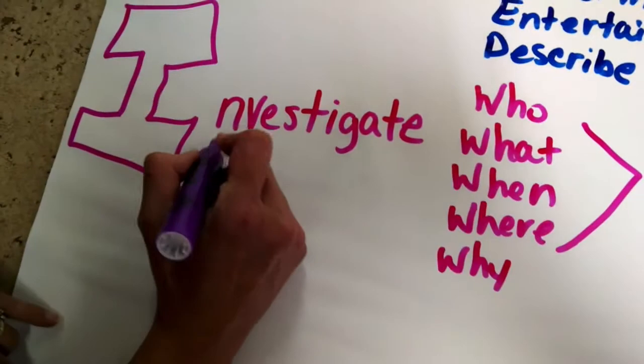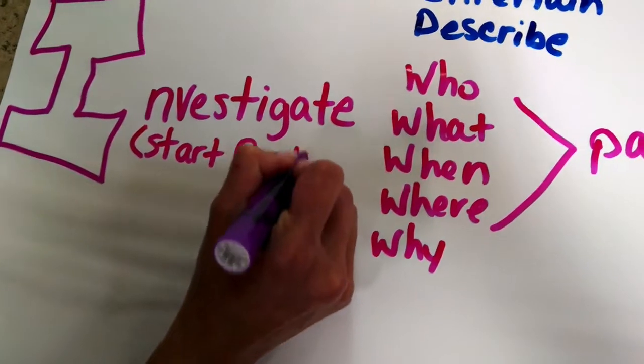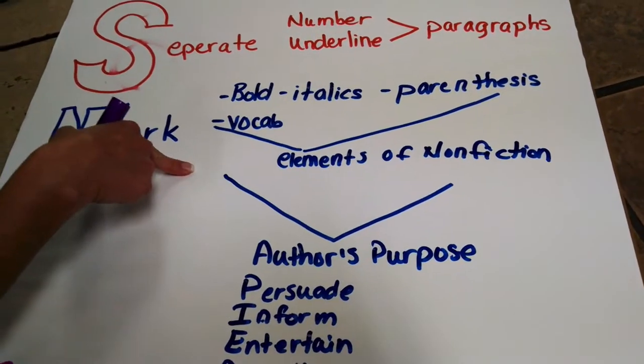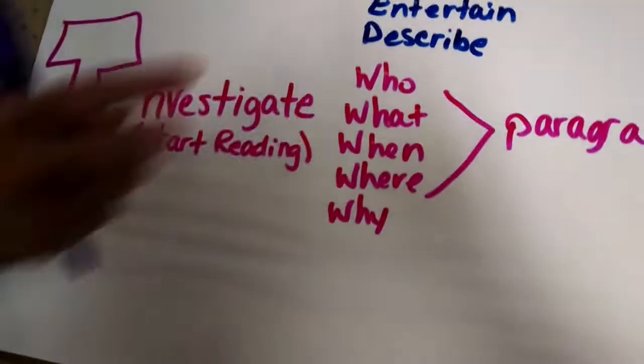This is actually when you start reading. So you go through S and M and you're not even reading it? But based on these things, you can decide what the author's purpose is, what type of piece you're working with before you even start reading. So now we start reading.